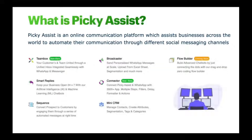For those who are new to the Picky Assist platform — we have around 500 participants today — Picky Assist is an online communication platform that assists businesses across the world to automate their communication through different social messaging channels. The core products include Team Box, designed for team collaboration on WhatsApp, allowing you to share one WhatsApp number with multiple team members. Smart Reply is based on artificial intelligence and keeps your business open 24/7 without deploying employees at the back end.